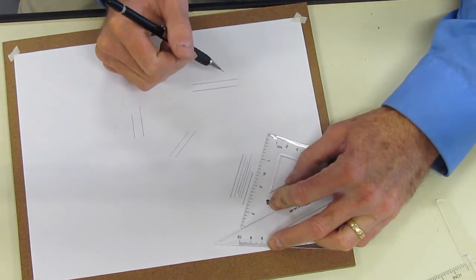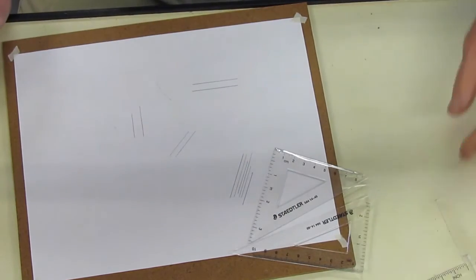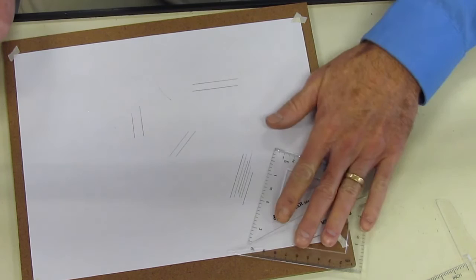So, I line it up a second time to get the same answer. That's how you make parallel lines to a given line using only triangles.